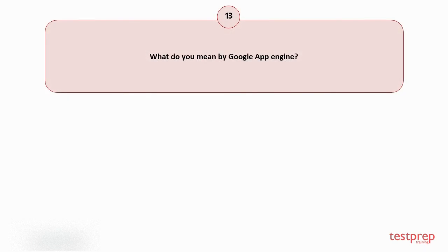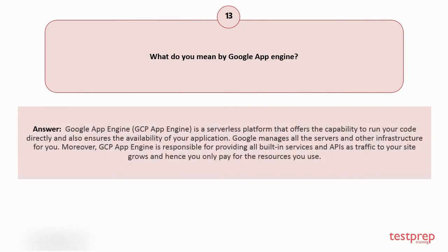Question number thirteen: What do you mean by Google App Engine? Google App Engine is a serverless platform that offers the capability to run your code directly and ensures the availability of your application. Google manages all servers and infrastructure for you. GCP App Engine provides all built-in services and APIs as traffic to your site grows, and you only pay for the resources you use.